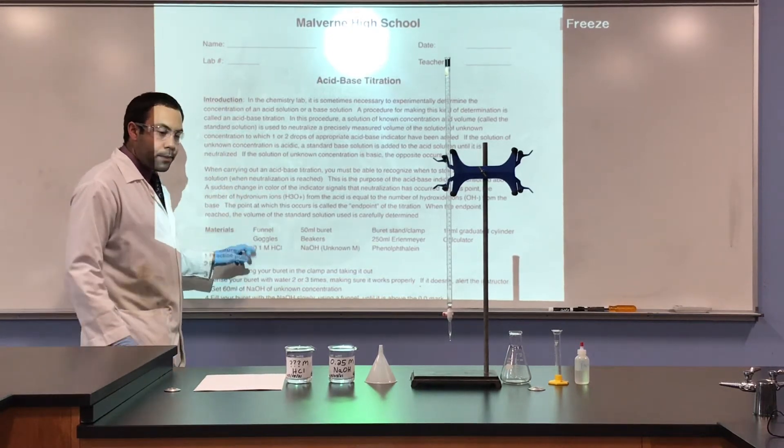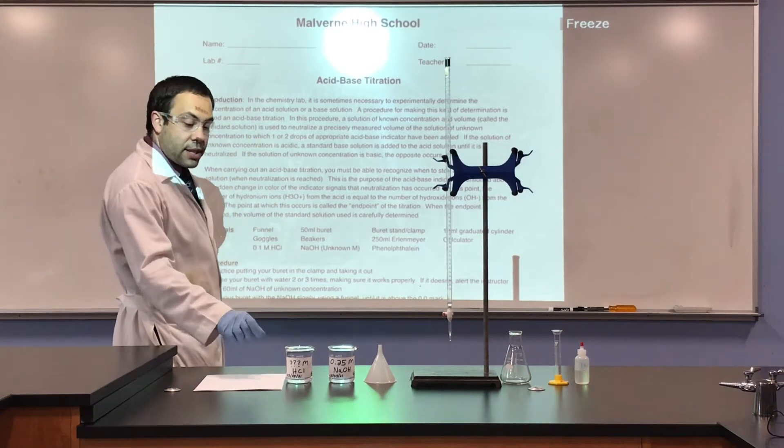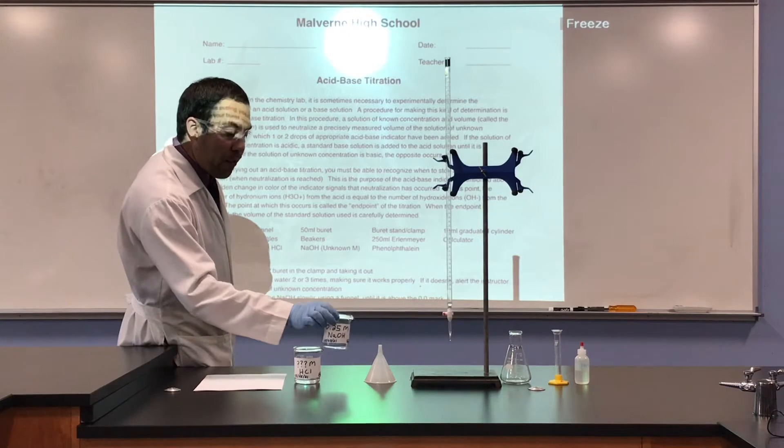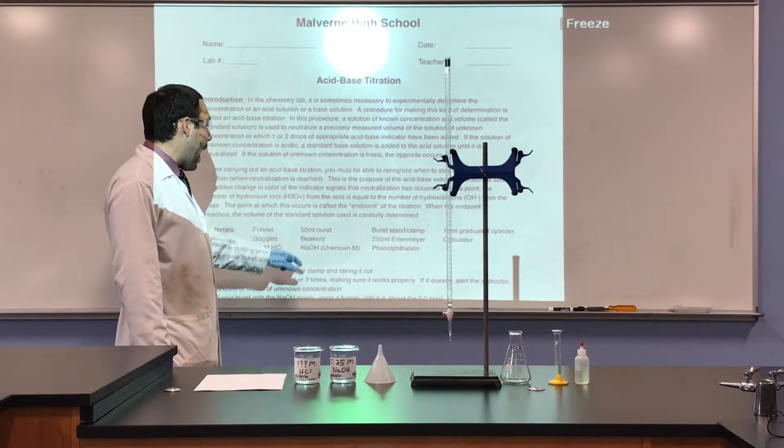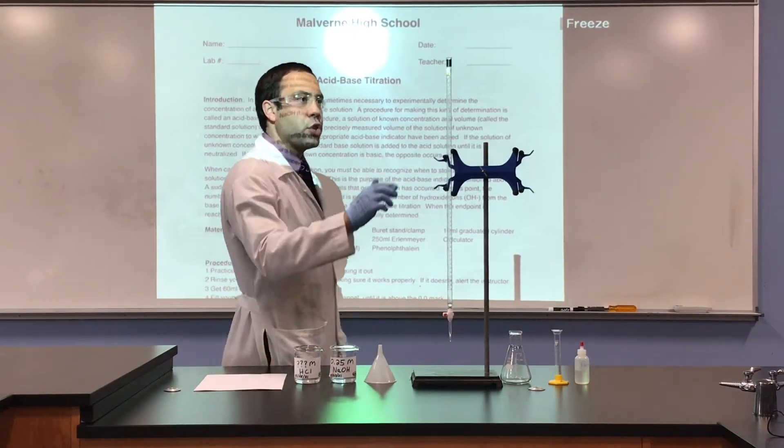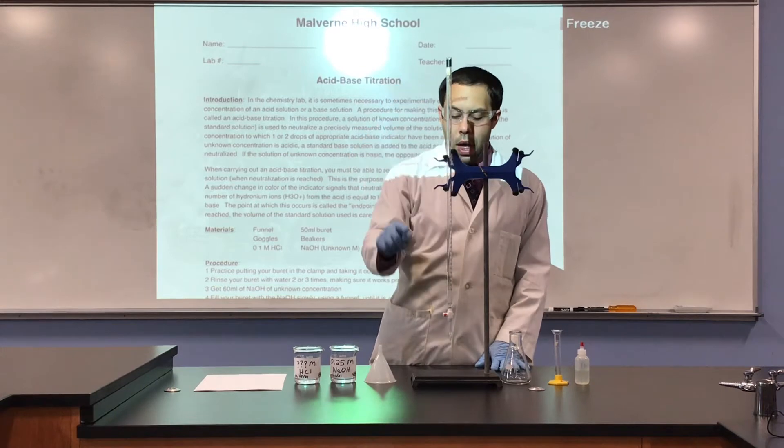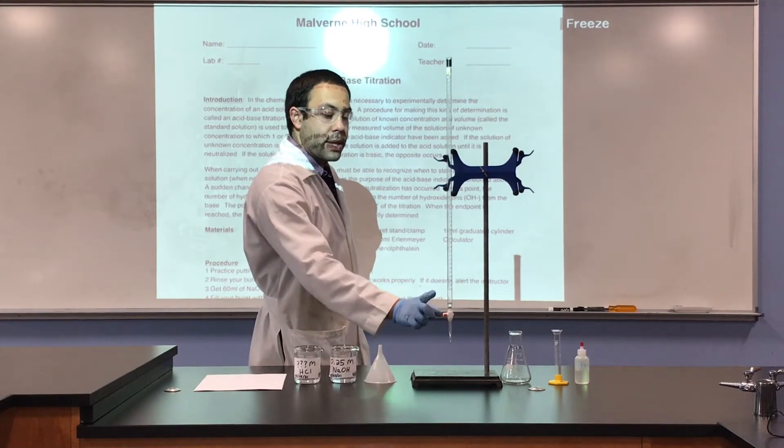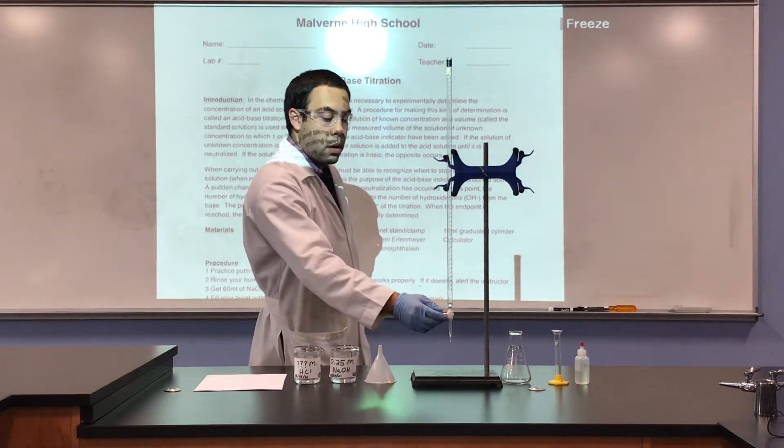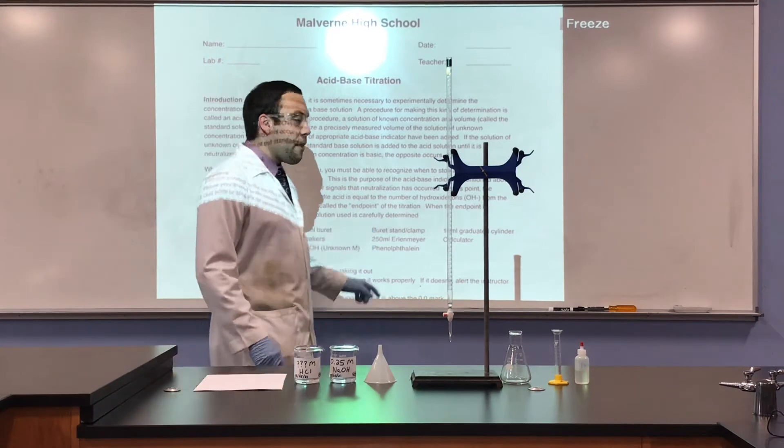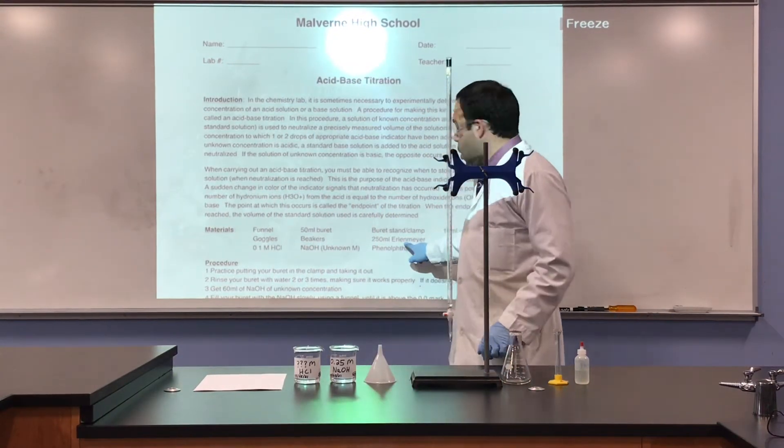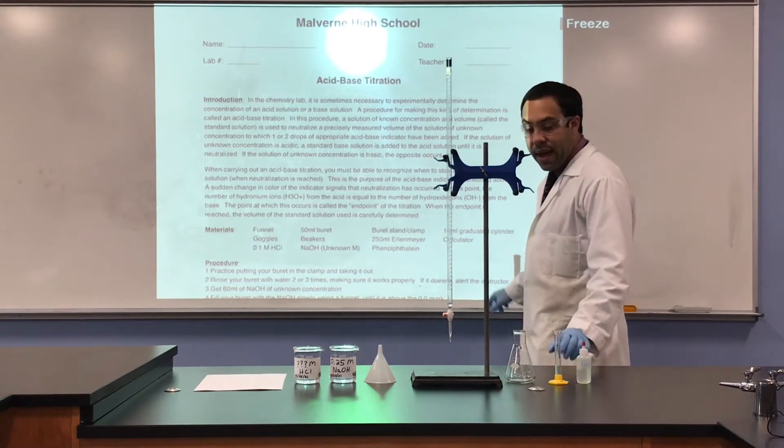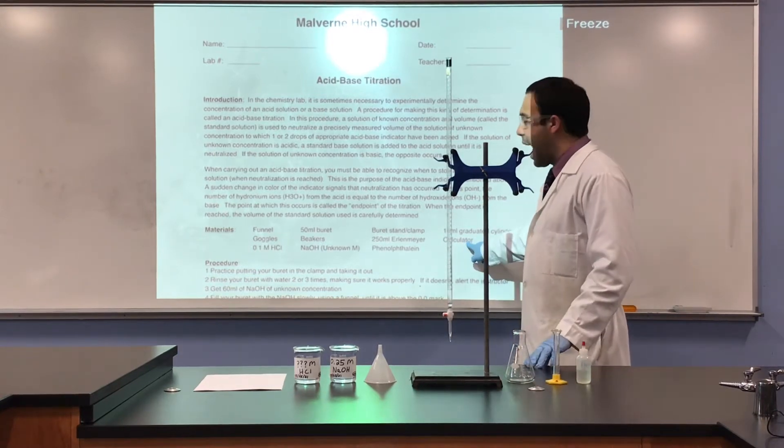So the materials we need: goggles of course, funnel. Today we're going to use an unknown concentration of HCl, hydrochloric acid. And we'll have a known concentration, 0.25 molar NaOH. We have our burette, this long glass tube with graduations. It starts here at 0, and it ends down here at 50. We can see the valve, also known as the stopcock, is off when it is in a perpendicular direction. Perpendicular it is closed, and parallel is open. We have the burette stand and clamp, an Erlenmeyer flask, phenolphthalein our acid-base indicator, a 10-milliliter graduated cylinder for our acid, and we will also use a calculator.